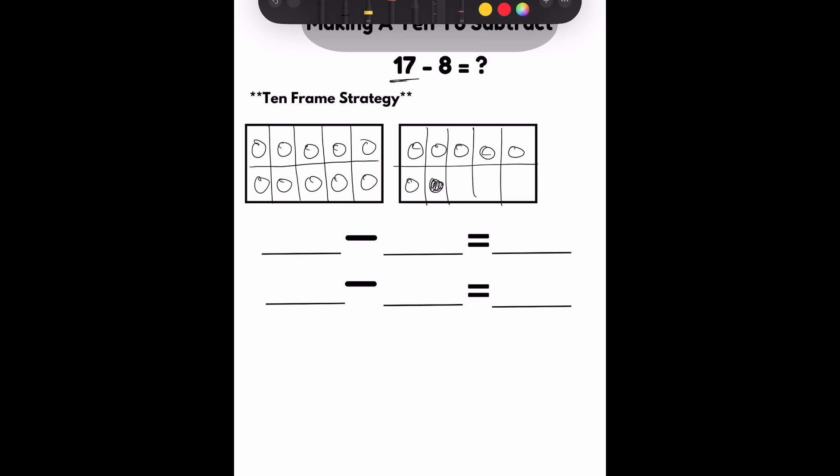Now, I need to take away 8. That means I'm going to shade in 8. So, I had 17 to begin with. Looking at this right 10 frame that is not filled in all the way. I need to look at that and see how many I took out of there. And I took away 7 in there.